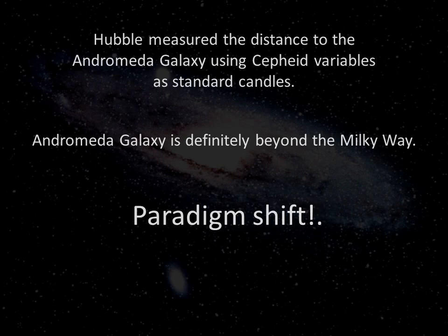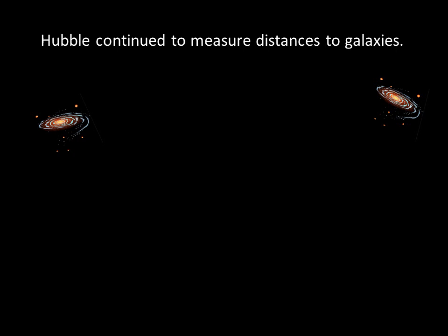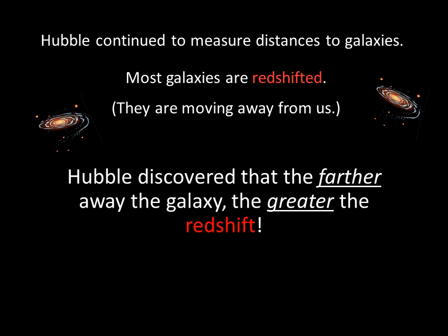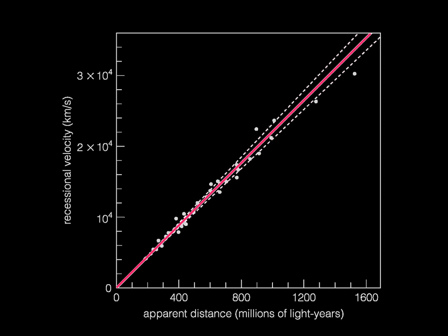This marked the beginning of a paradigm shift on how we viewed the universe. With this measurement, we learned that our Milky Way is one among many islands of stars in a vast cosmic ocean. Hubble's Andromeda galaxy distance measurement set the stage for an even greater discovery. Hubble continued to measure the distances to other galaxies and found something very interesting: most galaxies were redshifted, meaning they must be moving away from us. Hubble found that the farther away a galaxy, the greater its redshift — and therefore, the faster it's moving away from us.